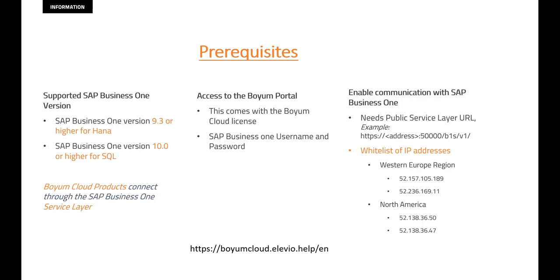Then you need access to the Boehm Portal. This comes with your cloud license automatically — you will get an email. And of course you need an SAP Business One username and password.